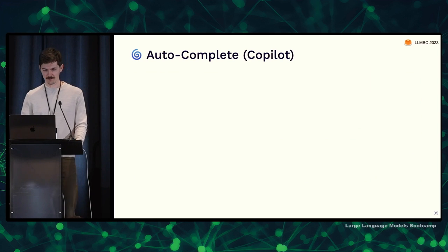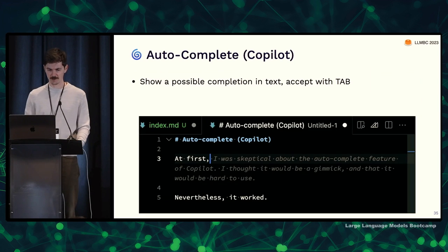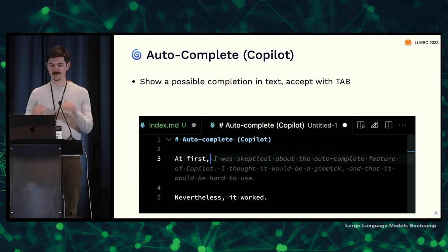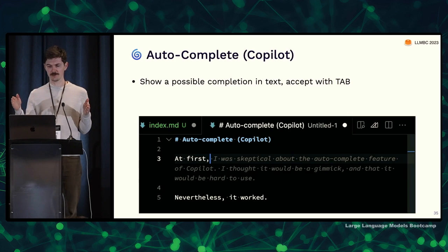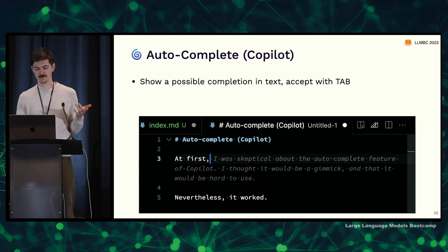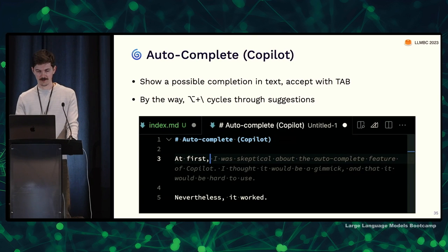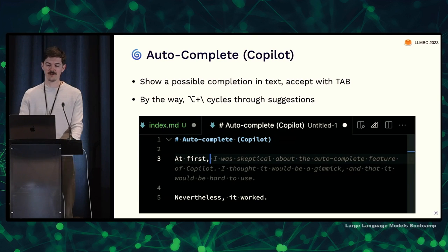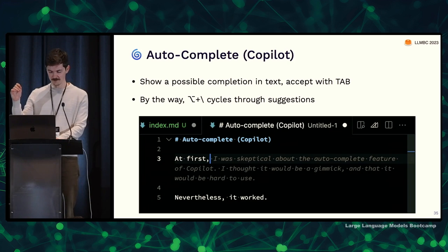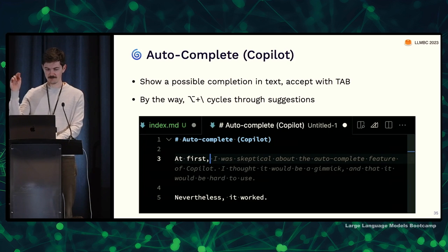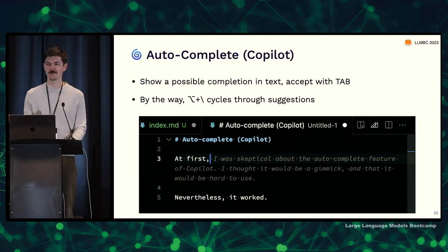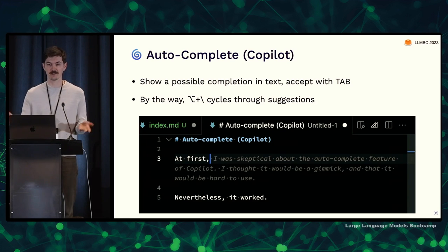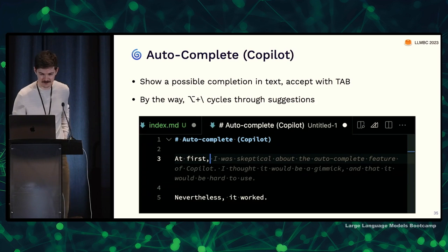Another pattern is autocomplete in GitHub Copilot. This is in the text editor you're already working in — it shows you a completion and you can accept it with Tab. On Mac, option-slash will cycle through other suggestions, which is really useful when you learn it, but there's no signifier that that's possible unless you read the docs.